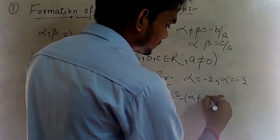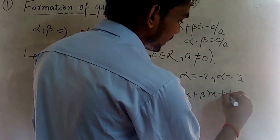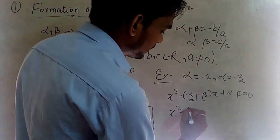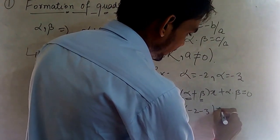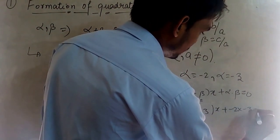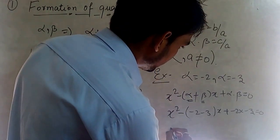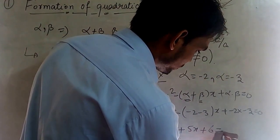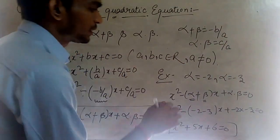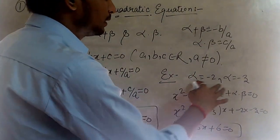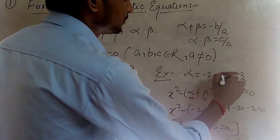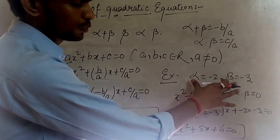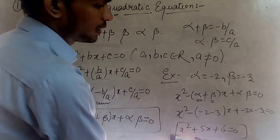Using x² − (alpha + beta)x + (alpha × beta) = 0, we substitute alpha = −2 and beta = −3. We get x² − (−2 + −3)x + (−2 × −3) = 0, which gives x² − (−5)x + 6 = 0, and therefore x² + 5x + 6 = 0. This is the quadratic equation. So if we have the values of alpha and beta — the roots of the equation — we can find the quadratic equation.